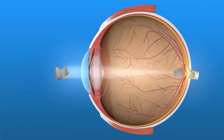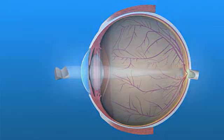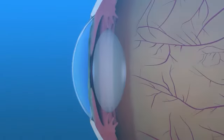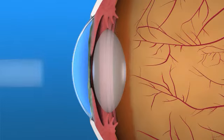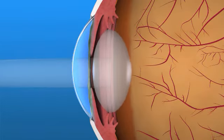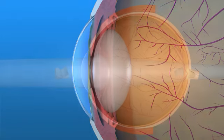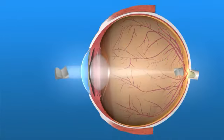Presbyopia develops when our eye's natural lens loses its flexibility, making focusing up close more difficult. The ciliary muscle contracts, which causes our flexible lens to thicken or change shape. This change in shape allows us to see objects up close.